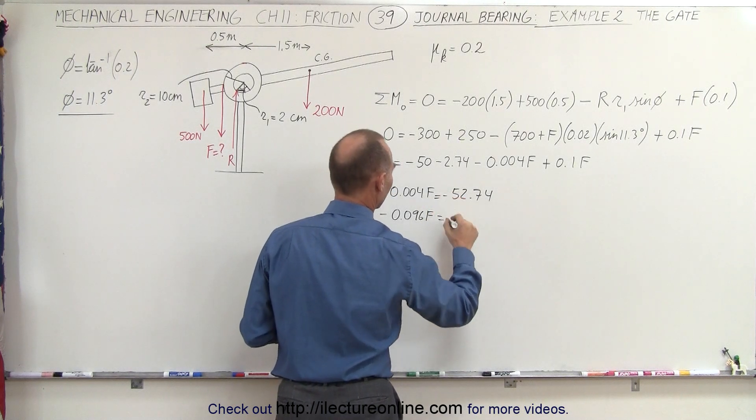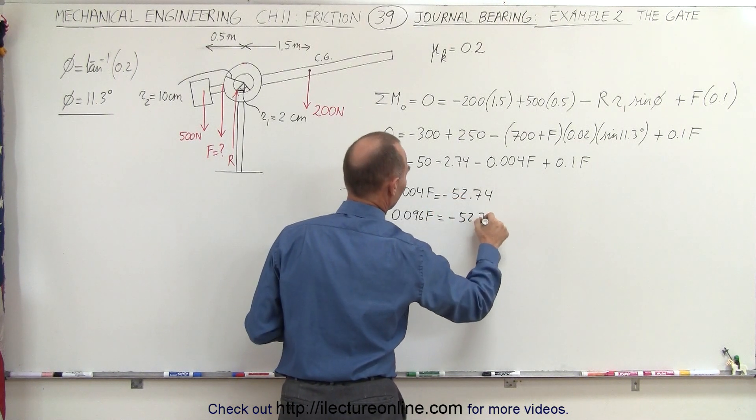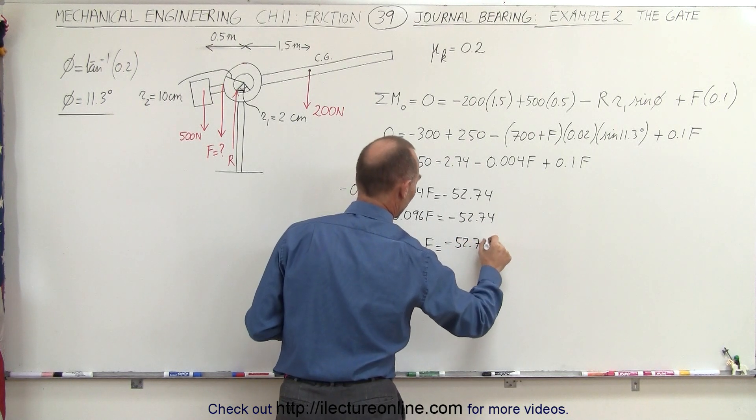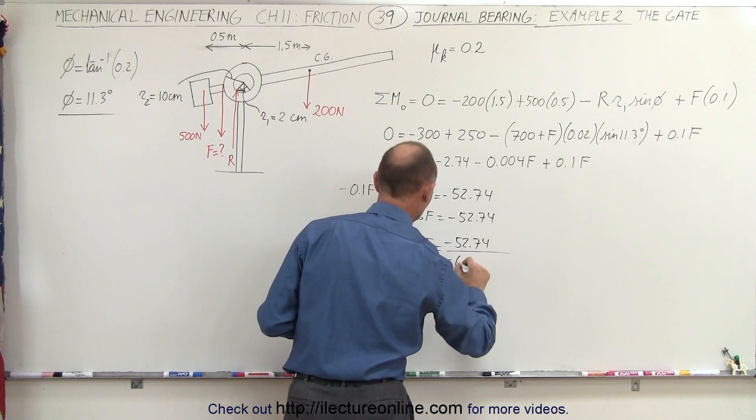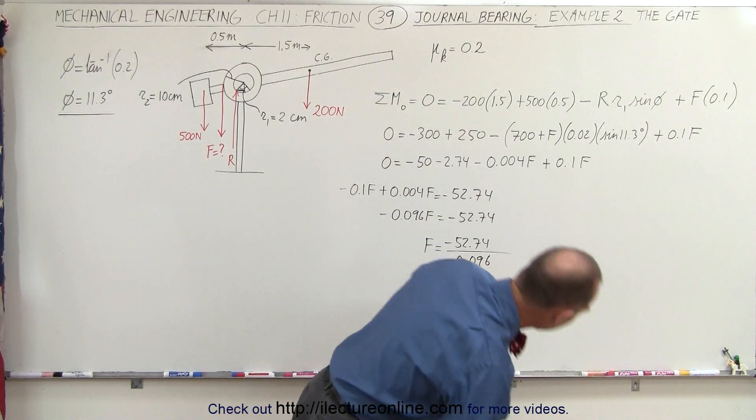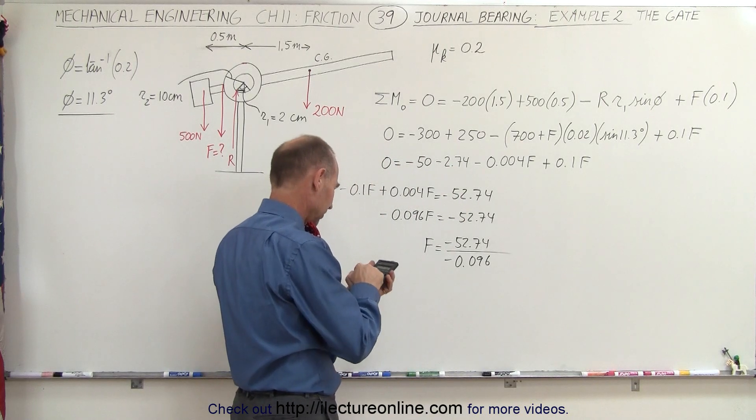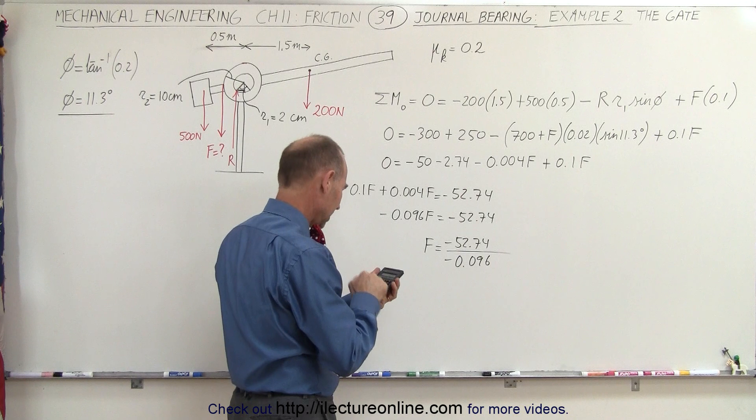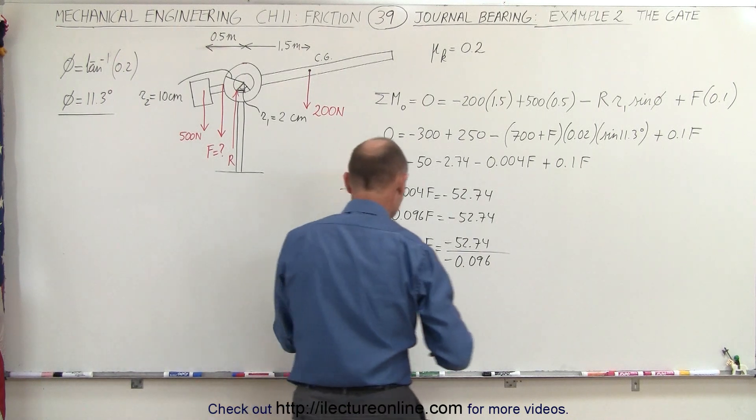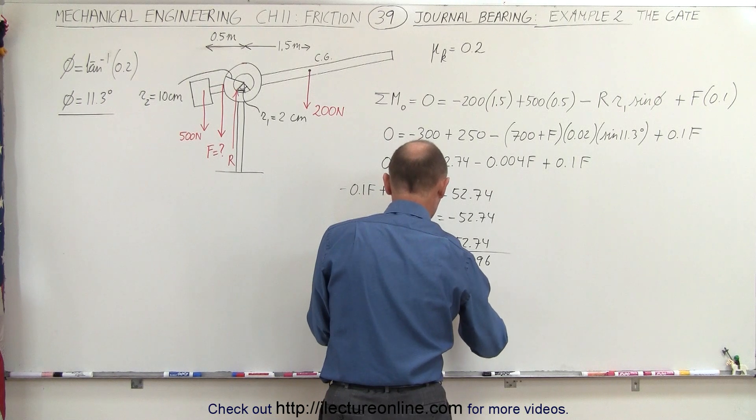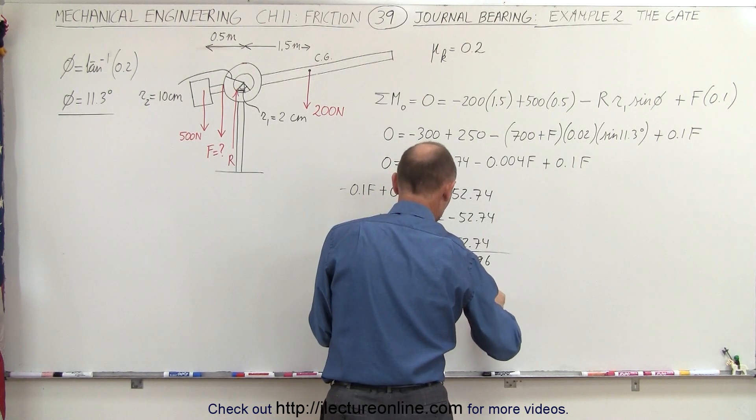And F is equal to minus 52.74 divided by minus 0.096. All right, let's see what that's equal to. 52.74 divided by 0.096 equals, and that would be F is equal to 549 newtons.